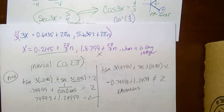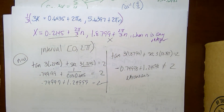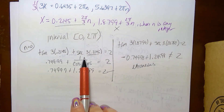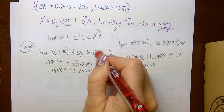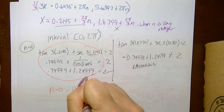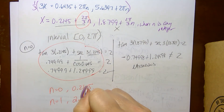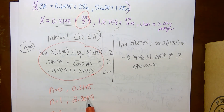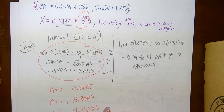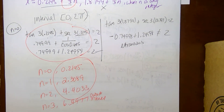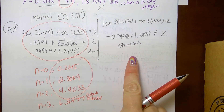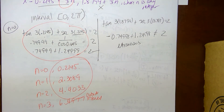Working through the remaining solutions in the interval: n = 0 gives 0.2145, n = 1 adds 2π/3 giving approximately 2.3089, n = 2 adds another 2π/3 giving approximately 4.4033. At n = 3, the value exceeds 2π. The 1.8799-based solutions all turn out extraneous because the tangent values are negative and the sum can't equal 2. The three valid solutions within 0 to 2π are approximately 0.2145, 2.3089, and 4.4033.